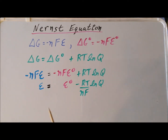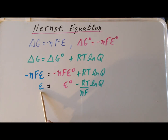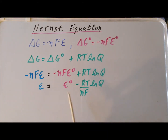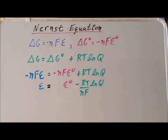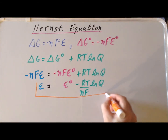The important things here are: by dividing through by minus N times F, we now have an expression purely in terms of the overall voltage for the cell, in terms of the voltage under standard conditions, and we see that we have this additional minus RT over NF times the natural log of Q term. This is the result that we wanted — the so-called Nernst equation.